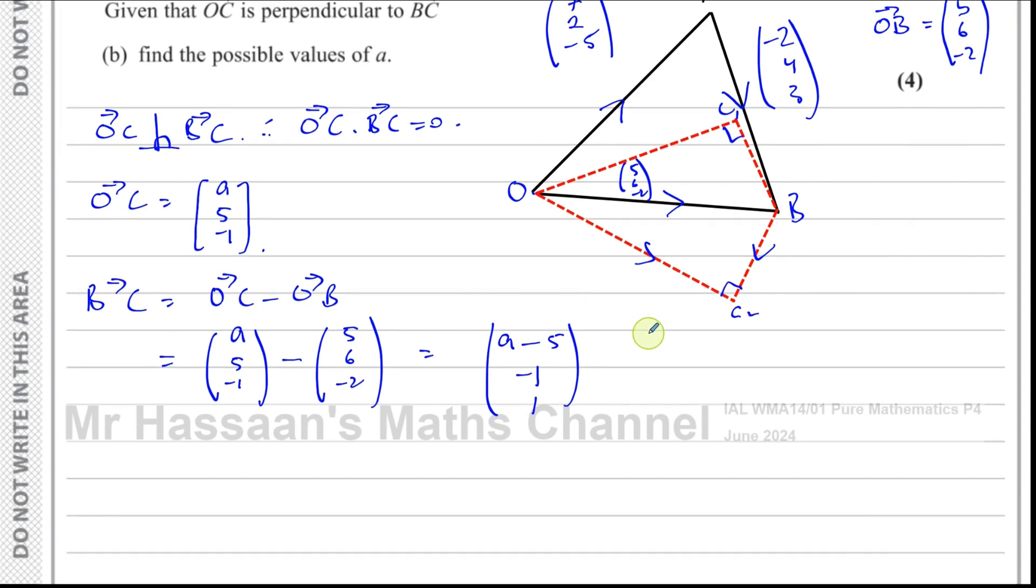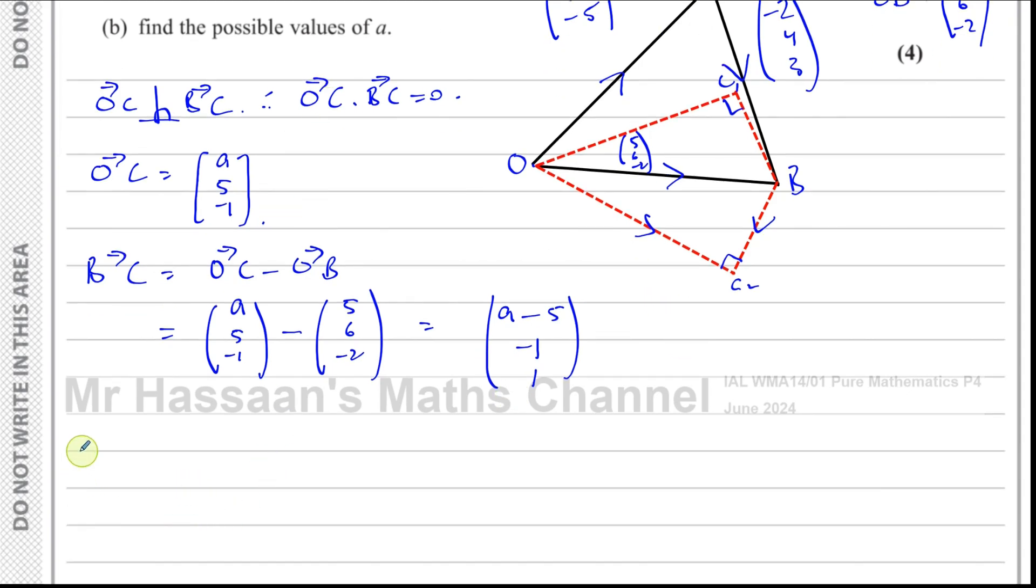I know that BC and OC, the dot product is 0. So if I do a, minus 5, minus 1, 1 dot product with OC, that's a, 5, and minus 1, that's going to give me 0 which leads us to an equation. Dot product is found by multiplying the i components together, that's a times a, plus these two multiplied together, that's minus 5, plus these two multiplied together, that's minus 1. And we know when they're perpendicular that this has to be 0.